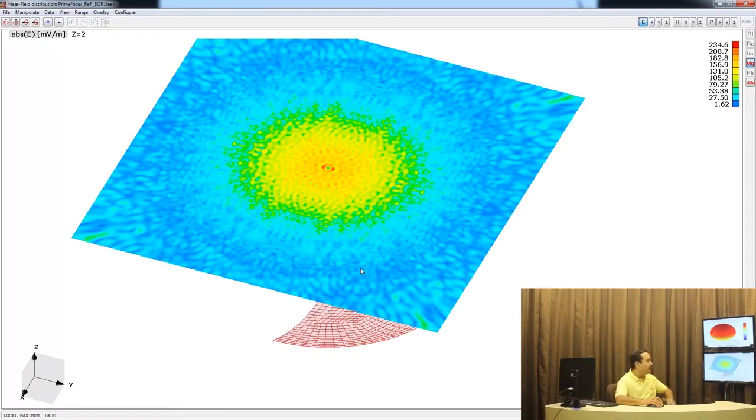What is coming on screen now is a plane at certain distance above the reflector and how exactly the electric field looks like in this particular horizontal plane cut. As you could see, the E-plane is definitely focused at the center. We have a very nice primary beam of the reflector and then some scattering effects around the edges of the reflector.